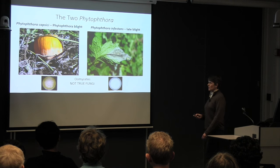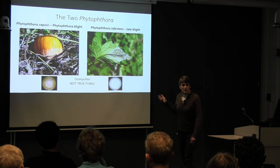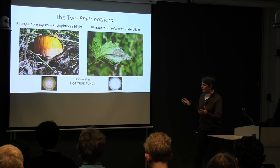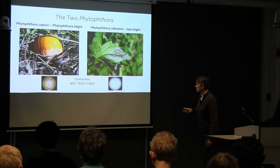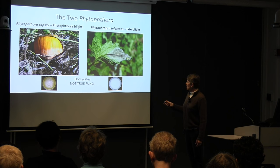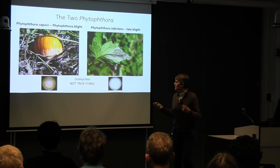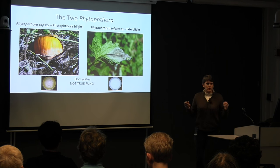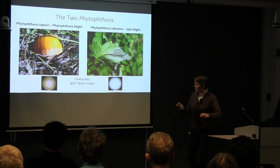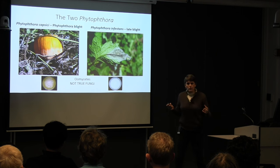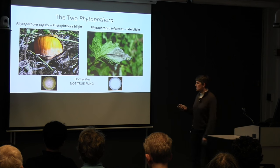On to the Phytophthora. On the left we have Phytophthora blight; on the right we have late blight. You might think they're very similar diseases — they look pretty similar in culture. Both pathogens are oomycetes; they're not true fungi. They're in an entirely different kingdom, and even though they look in culture like a true fungus, they're really a very different type of organism.